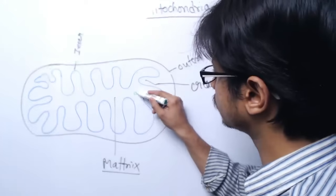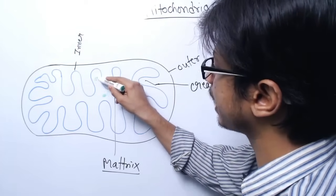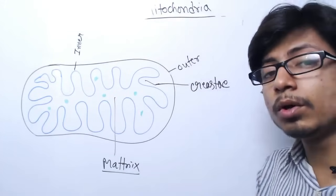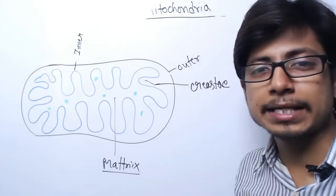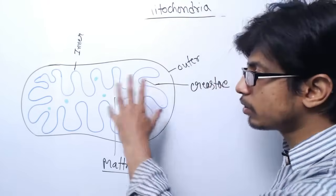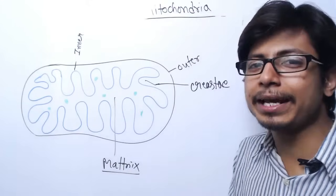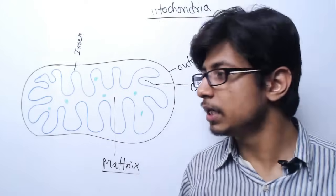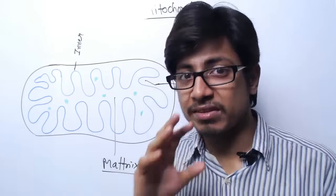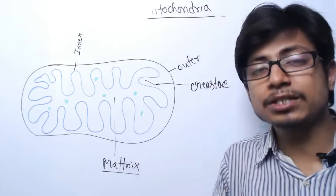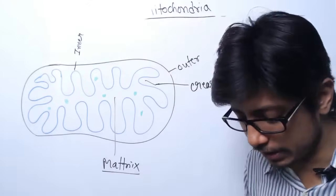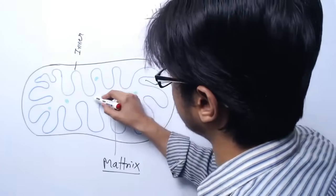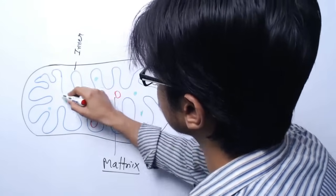Many different types of proteins are scattered in this matrix area. Two more things are found in the matrix: one is known as mitochondrial DNA, because mitochondria is an organelle that also contains DNA. We know that DNA is normally present inside the nucleus of eukaryotic cells, but mitochondria carries its own DNA inside the mitochondrial matrix. That is known as mitochondrial DNA, or mtDNA. Those are small circular DNA found inside the matrix.